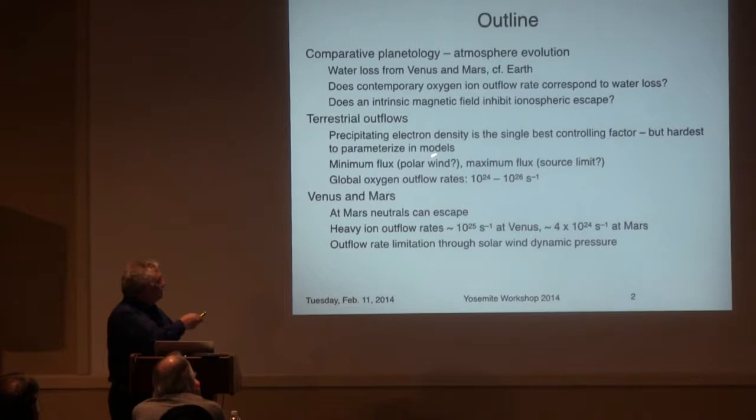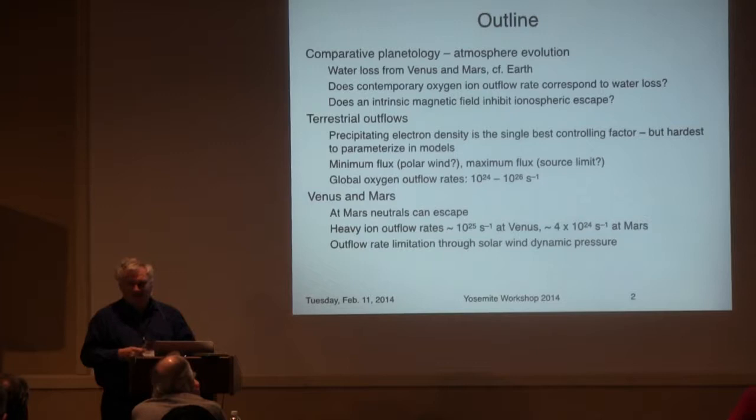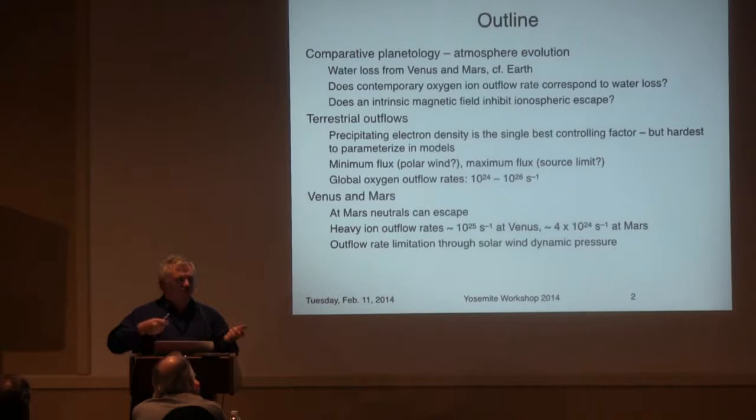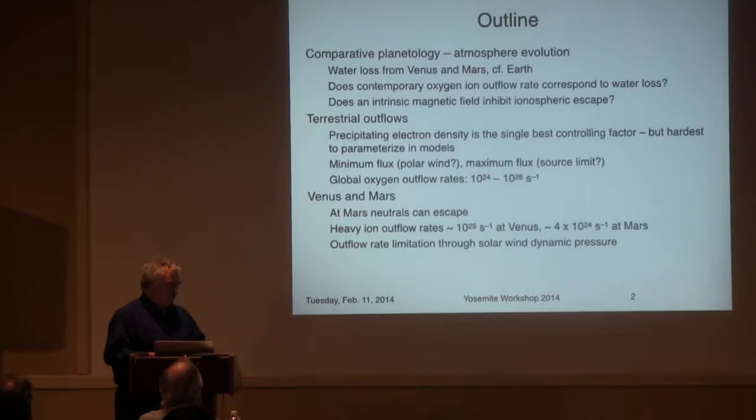From statistical correlation analyses, the single best predictor of outflow rates is the precipitating electron density. If you have to take one number and one number only, it's going to be electron precipitation. The trouble is that's the hardest parameter to make a parametric study of, in that precipitating electrons depend on a lot of other processes, so it's hard to put that into a model in an ad hoc way.